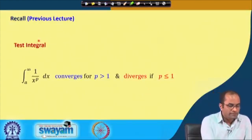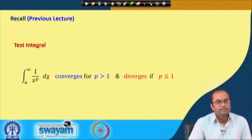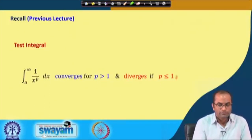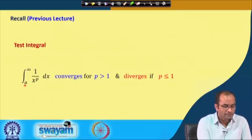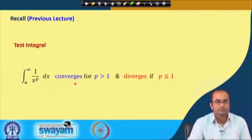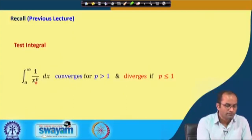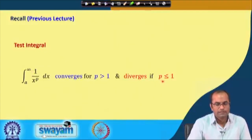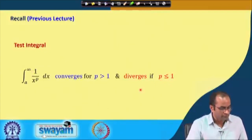To recall, in the previous lecture we discussed the test integral ∫a→∞ 1/x^p dx. It converges for p greater than 1 and diverges for p less than or equal to 1. This test integral will be very useful to compare with other improper integrals and conclude the convergence of the underlying integral. The convergence depends on p: for all p greater than 1 this integral converges, and for p less than or equal to 1 it diverges.